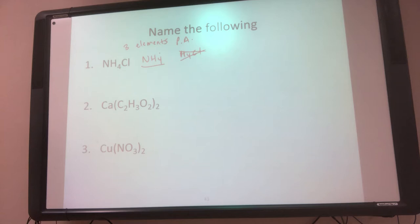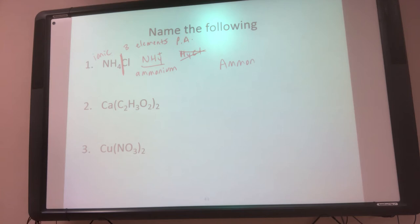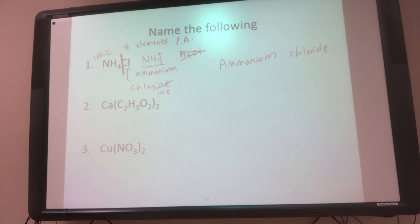So NH4 has a positive charge and its name is ammonium — it's the cation. Since there's a polyatomic ion, I know it's ionic. Now to name this, I just take the polyatomic ion's name. Then Cl is a non-metal, so I take its name, drop the ending, and add -ide. So this is ammonium chloride. Whenever there's a polyatomic ion, naming it is straightforward — it's just whatever the name is. But identifying the polyatomic ion — that's the tricky part.